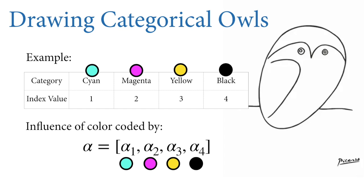Here's a toy example of how index variables work mechanistically. Imagine our categories are colors: cyan, magenta, yellow, and black — the primary pigments. For each category we assign an index: 1, 2, 3, and 4. The ordering doesn't mean anything — these are unordered categories and the numbers are labels that let us look up positions inside a vector. We'll have a vector of parameters alpha, of length four (one per color). When we want the estimate corresponding to each color, we look it up by its index value — its address on alpha street: cyan at address 1, magenta at 2, yellow at 3, black at 4.